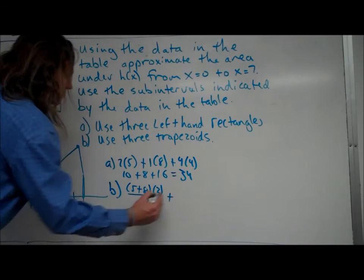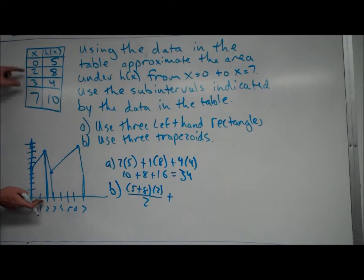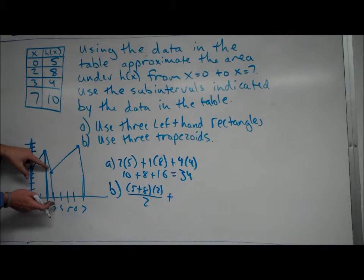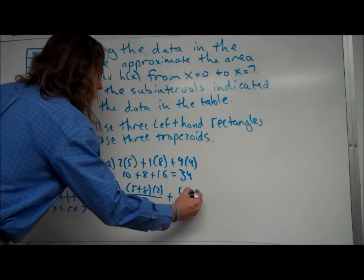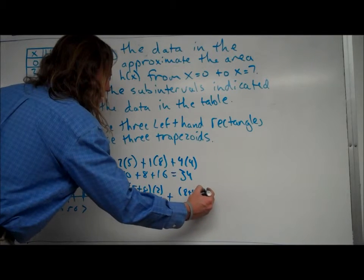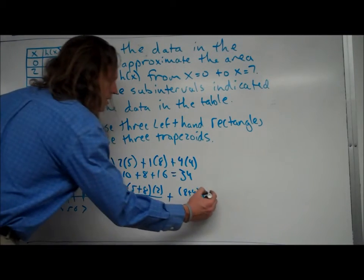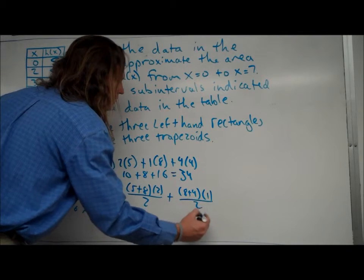For the next one, base 1 is going to be, indicated by up here is 8, base 2 is going to be 4. So it's 8 plus 4. The height, the distance between the bases is going to be 1. And then I'm going to go ahead and divide by 2.